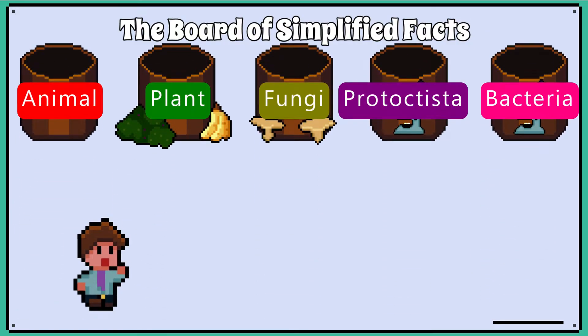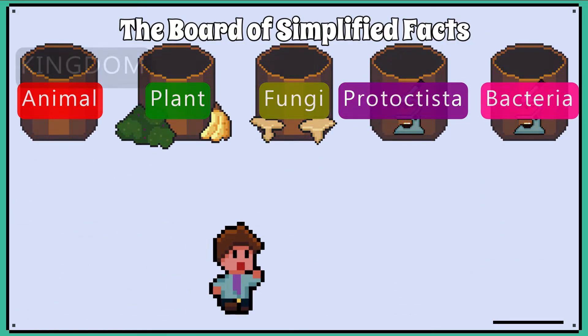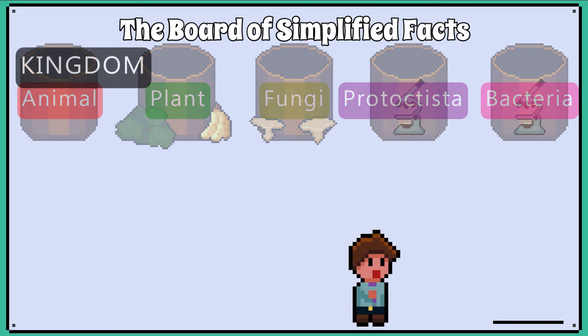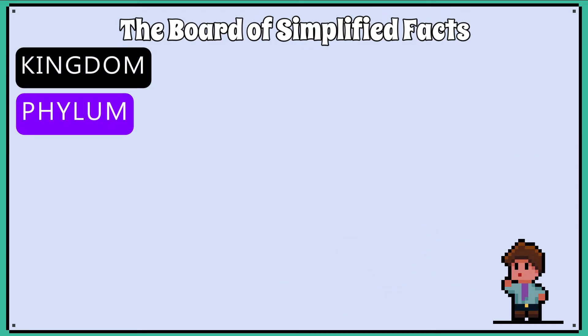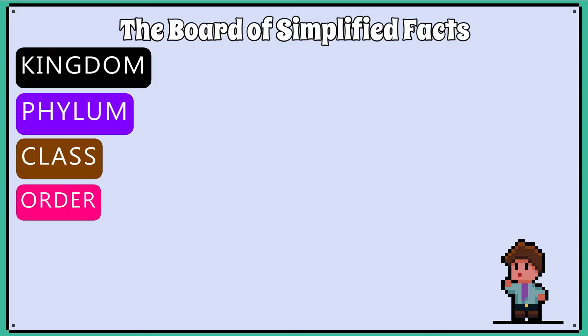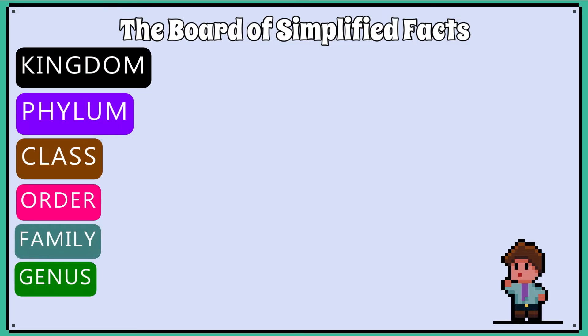Organisms are then sorted and separated into the following taxonomic categories: phylum, class, order, family, genus, and species.